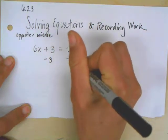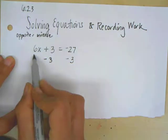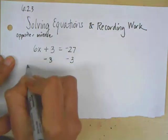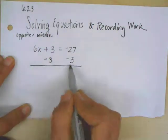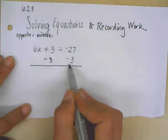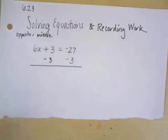So I'm keeping things balanced because I'm doing the same thing to both sides. So it's still equal because I subtracted 3 from both sides.